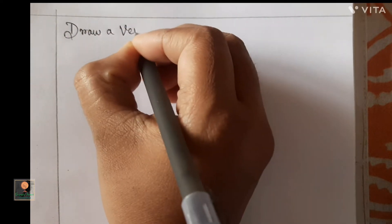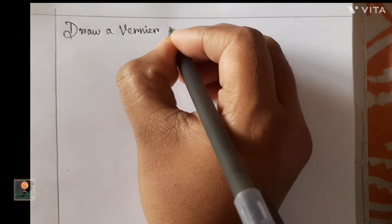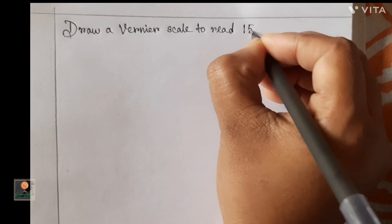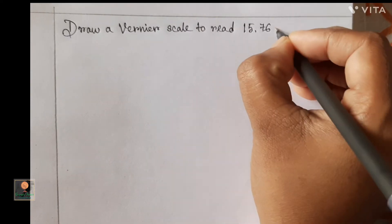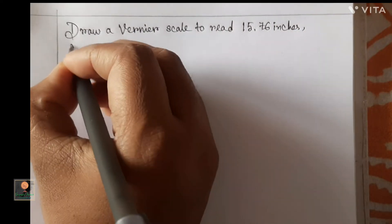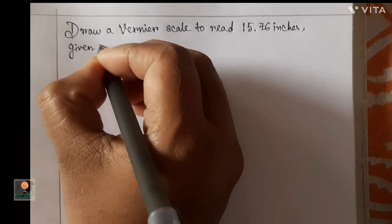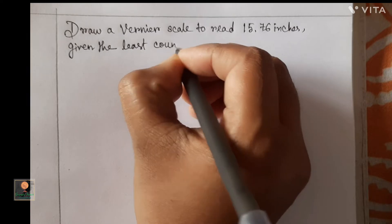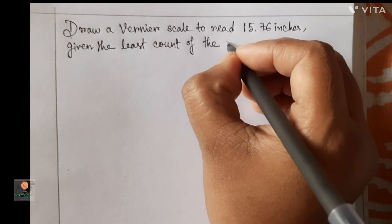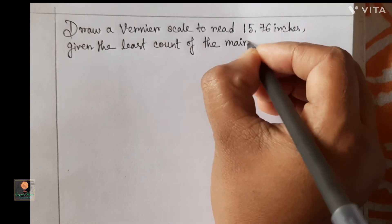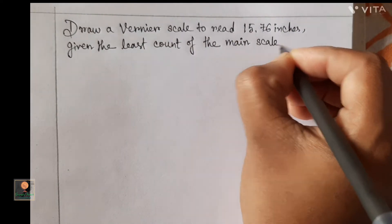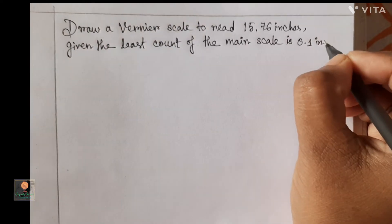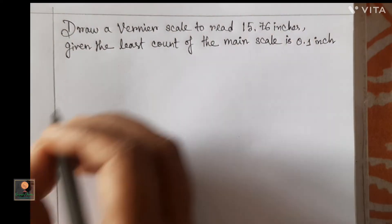Let's start the mathematics. The problem: draw a Vernier scale to read 15.76 inches, given the least count of the main scale is 0.1 inch, and 9 small main scale divisions are equal to 10 small Vernier scale divisions.